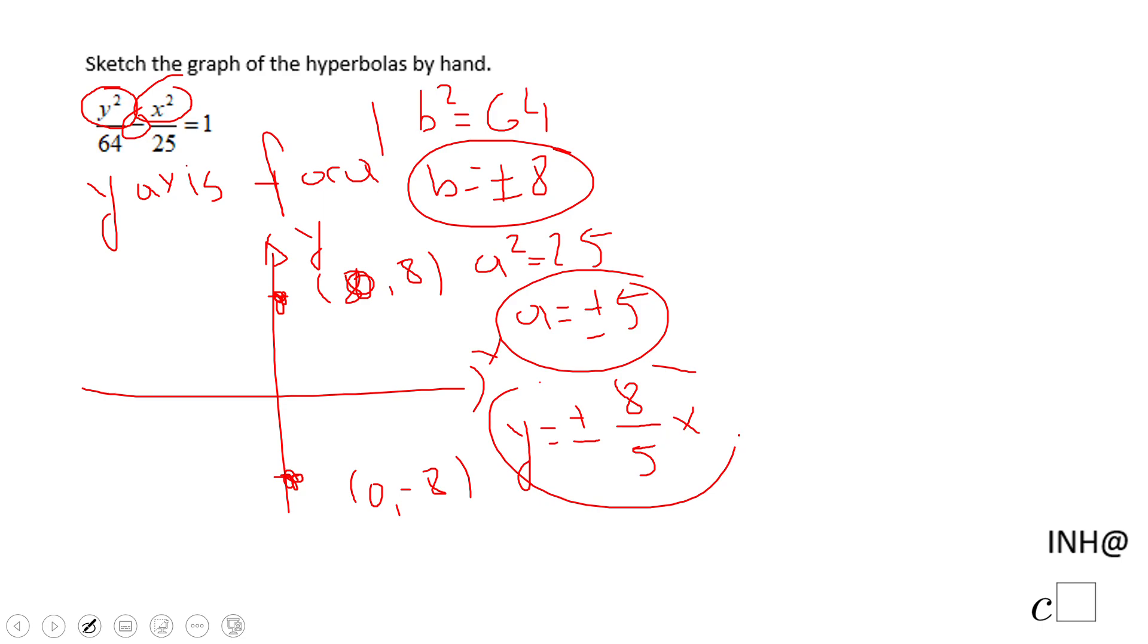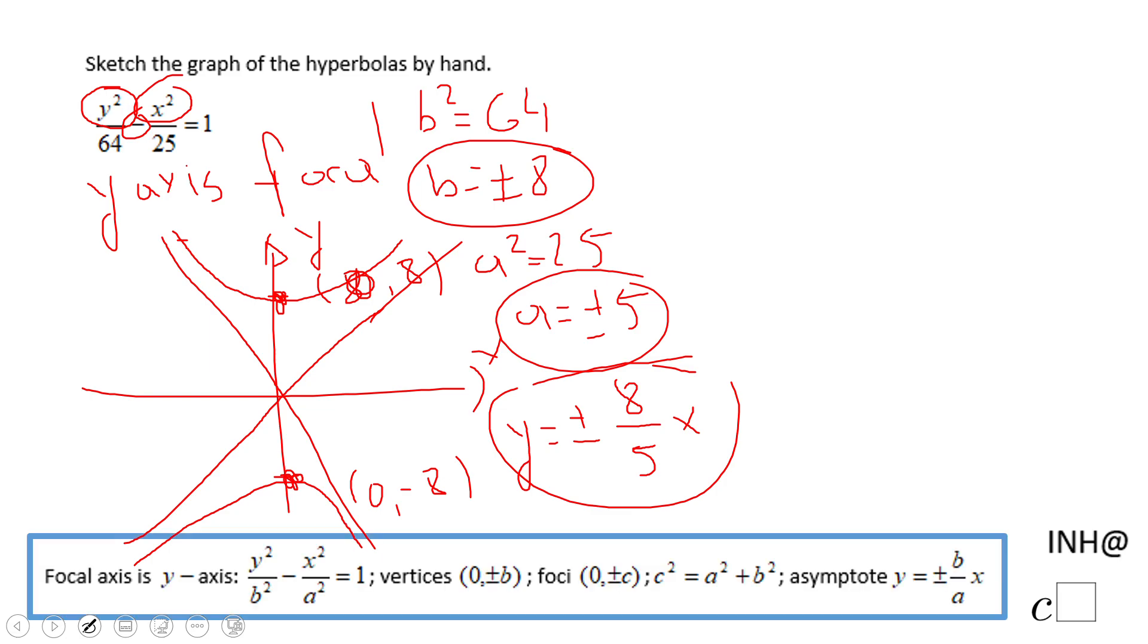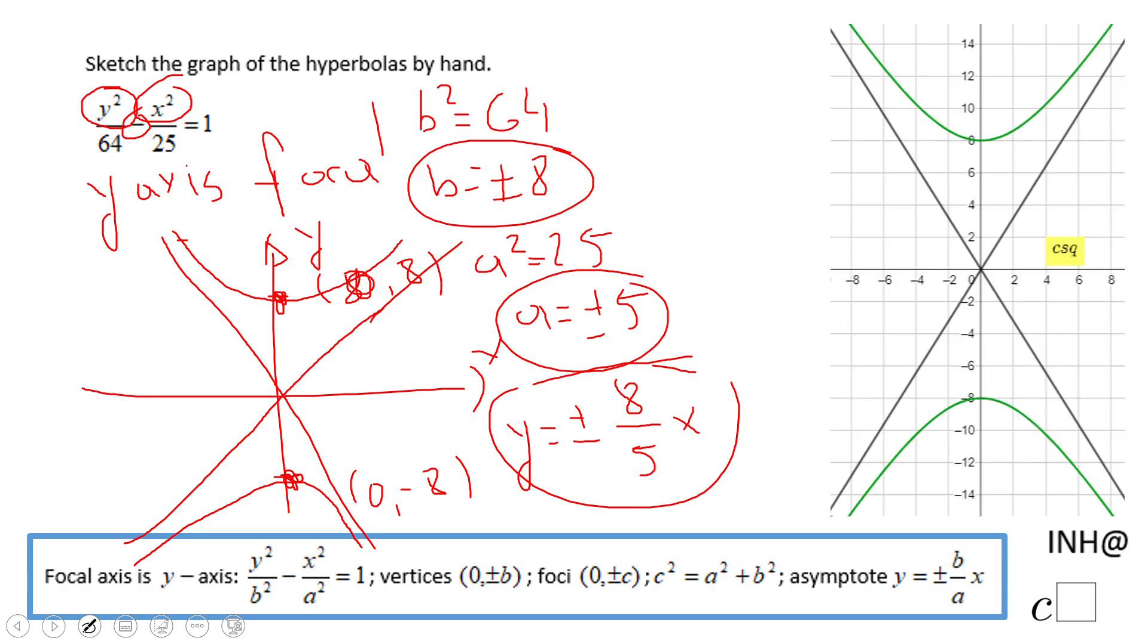Sketch these two lines, which need to go through the center, which in this case is (0,0), something like that. Then go asymptotic to these two lines. That should be a good sketch by hand. You notice here also the accurate graph, which is similar to mine.